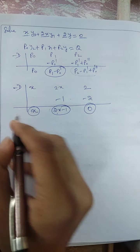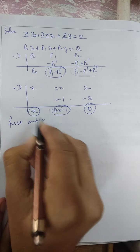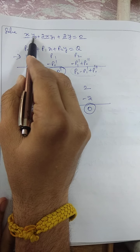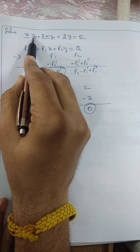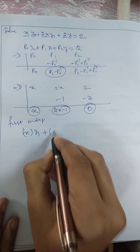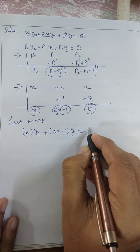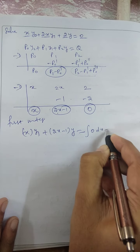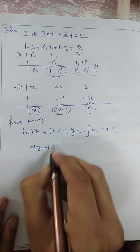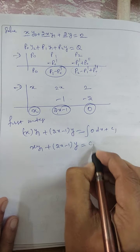Now we write the first integral. The first integral is: x·y' + (2x − 1)·y = integral of Q plus c₁, which gives x·y' + (2x − 1)·y = c₁.